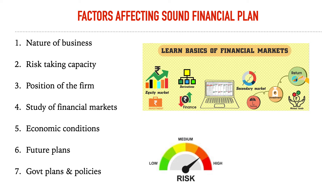The fifth factor is economic conditions — I need to look at exchange rates, the rupee value against the dollar, current taxation policies, what the budget says about my specific industry, and regulations on imports and exports. The sixth factor is future plans — I need to consider not just the current financial year but all upcoming financial years, planning for technology, labor, capital, and other resources required for the future.